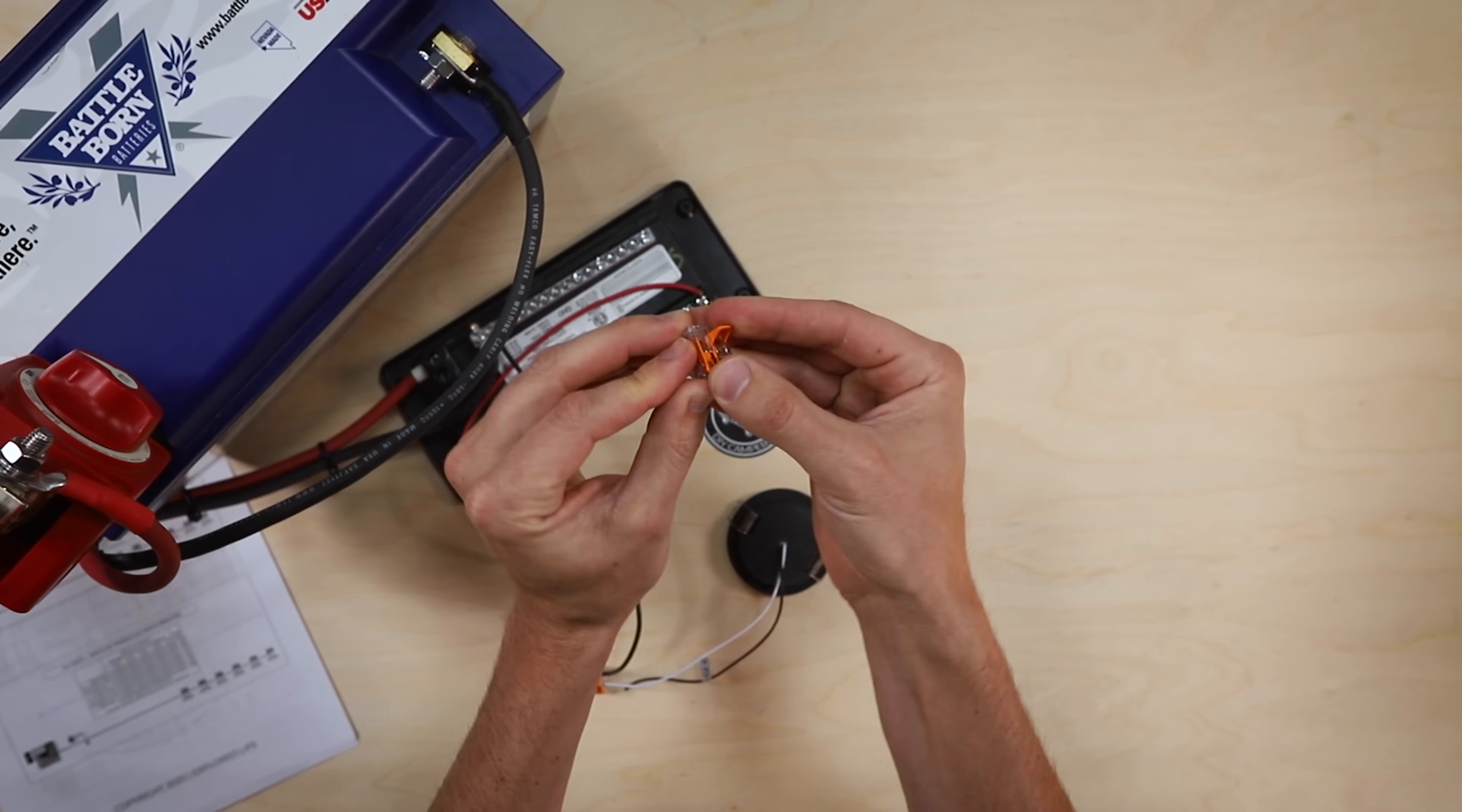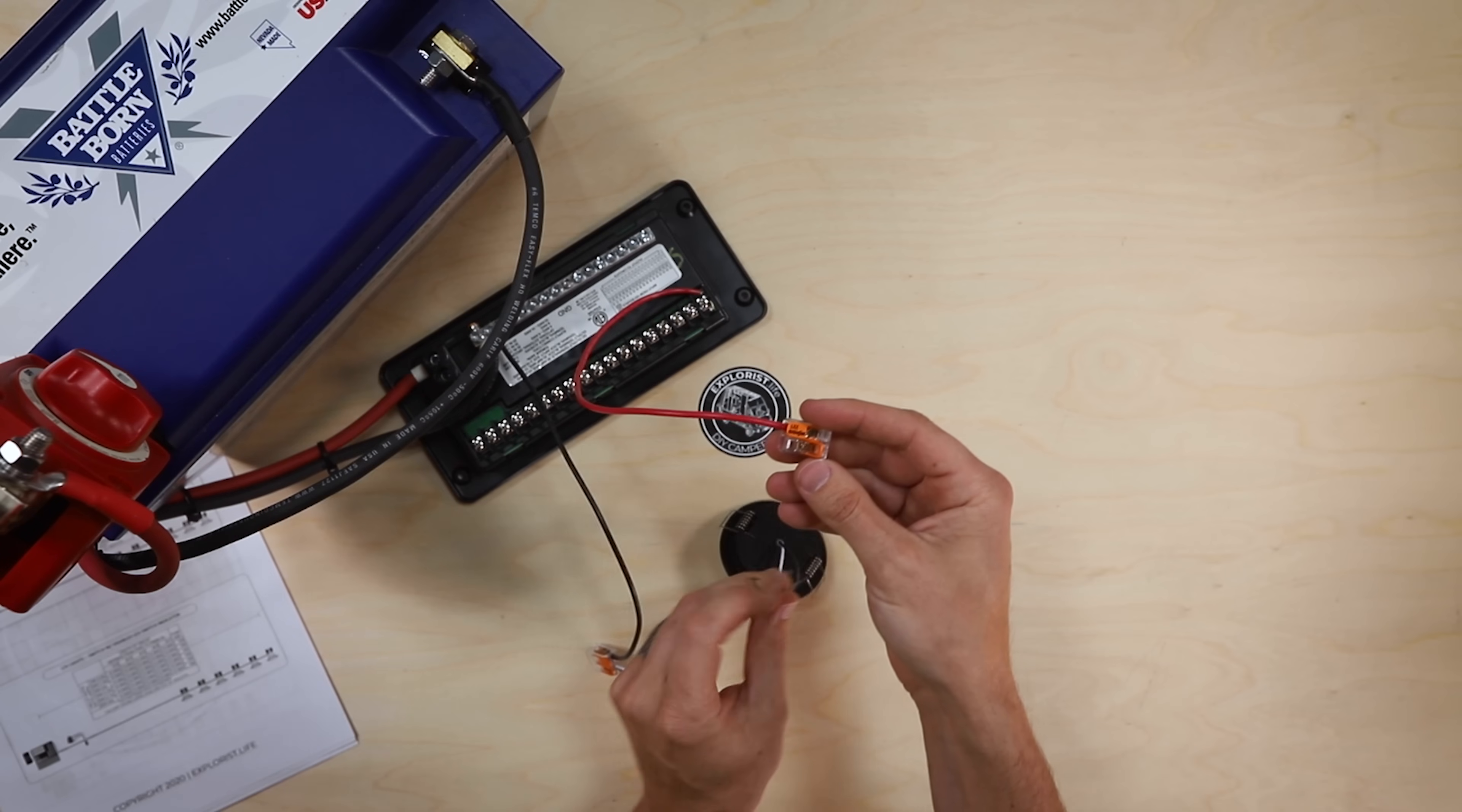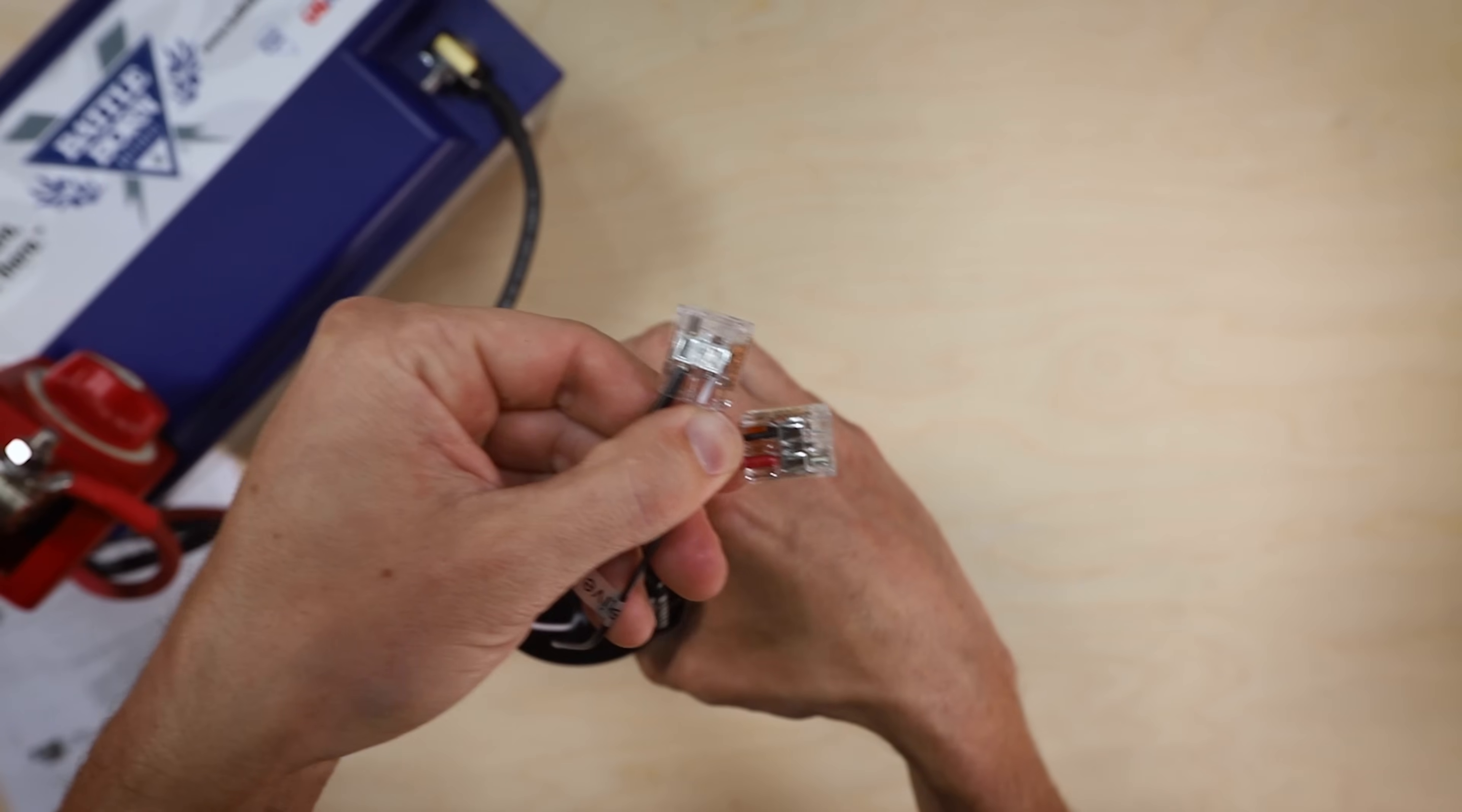And then take another lever nut, put the positive wire from the fuse block into one side and the positive wire from the light into the other side. And then visually inspect the back of this to make sure that each of these wires is in the back of the lever nut nice and secure.